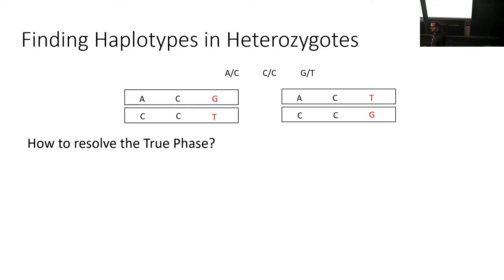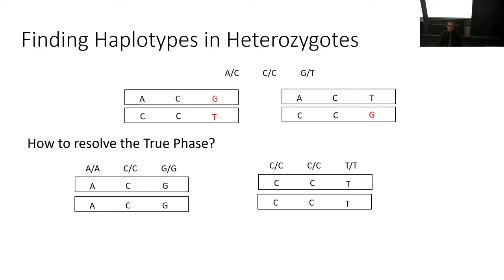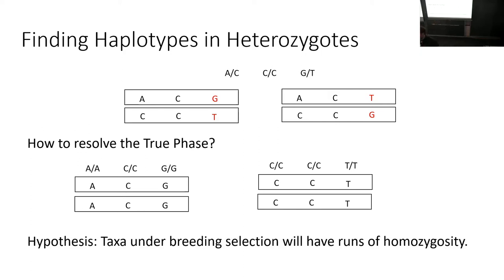So how do we resolve the true phase? We need haplotypes in the database before we can do any imputation. One way is if we can sample taxa that are homozygous at a range — we would know the true phase right there. Even though these are heterozygous crops, if we do find some homozygous regions, we can know the true haplotype phase. Because many are cultivated or come from breeding programs, we expect runs of homozygosity from years of selection and breeding efforts.